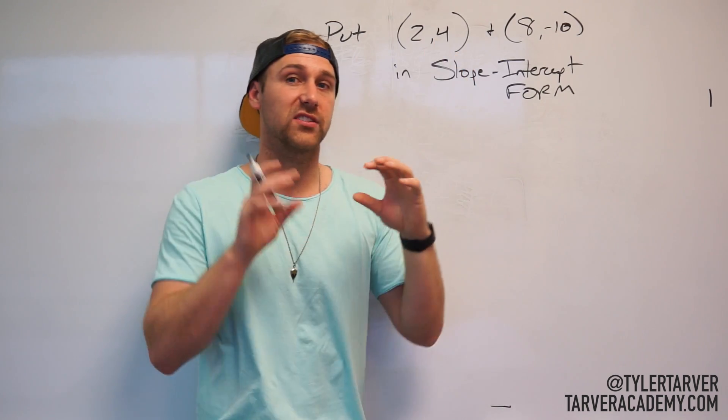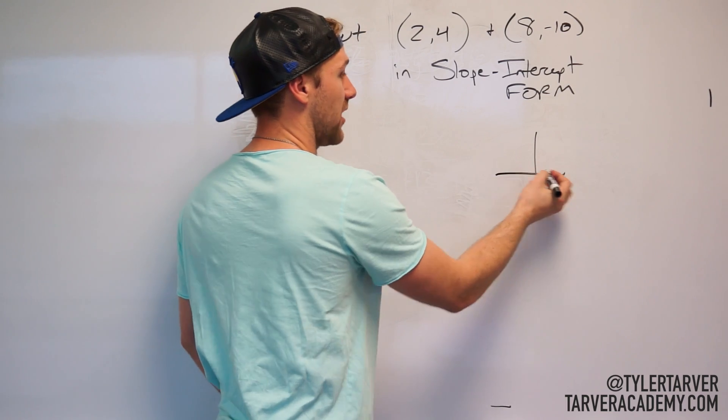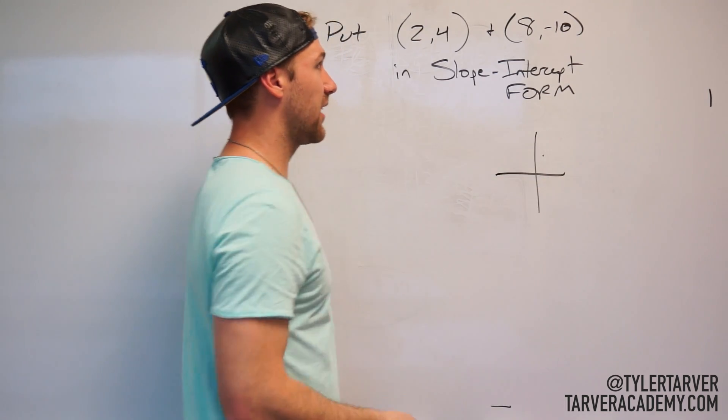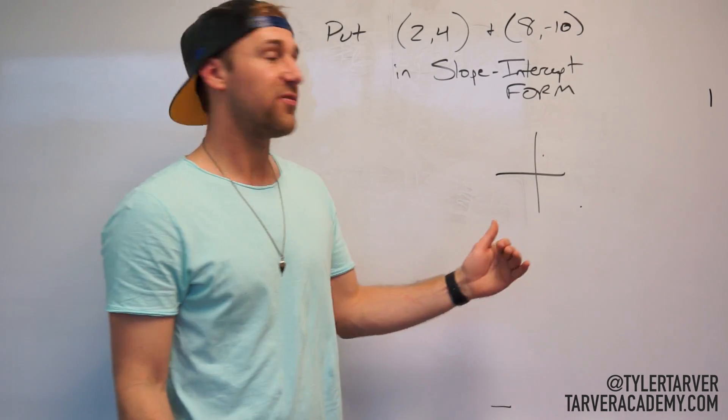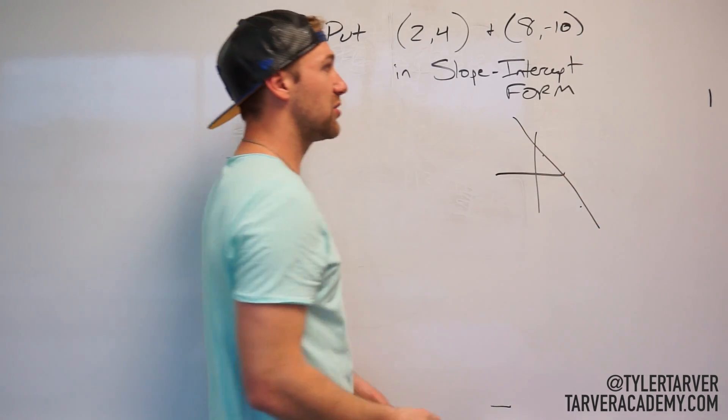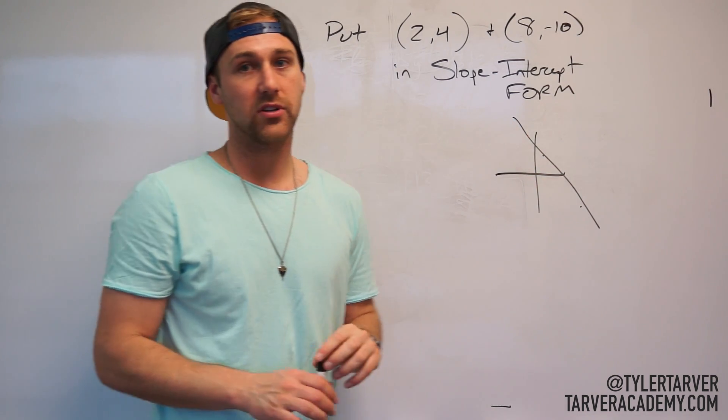We've got (2,4), that's a coordinate, that means it's a point on a graph, it's a point somewhere. It's 2,4, so it's like right there. And then you've got (8,-10), so you go 8, negative 10.